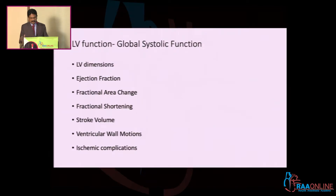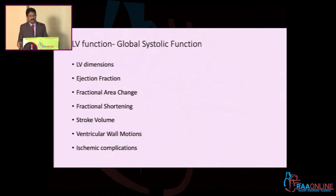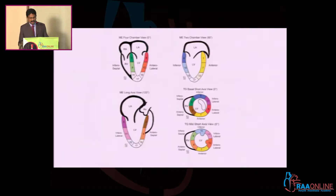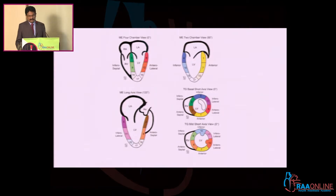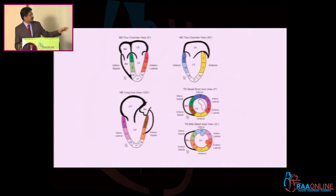Dislodgement, papillary muscle dysfunction — all this. Now, with 3D, we are going to analyze these segments. The LV has got 17 segments and for the 3D it is color-coded.